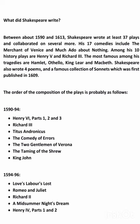The order of the compositions of the plays is probably as follows. 1590–94: Henry VI Part I, II, and III; Richard III; Titus Andronicus; The Comedy of Errors; The Two Gentlemen of Verona; The Taming of the Shrew; King John.